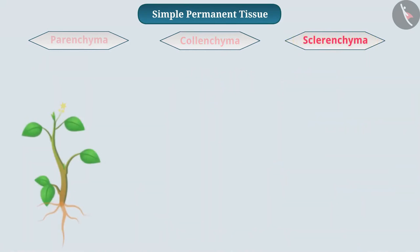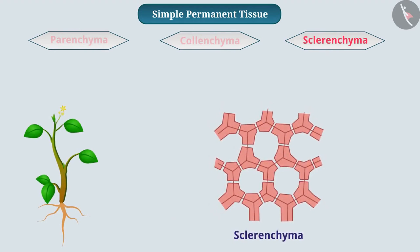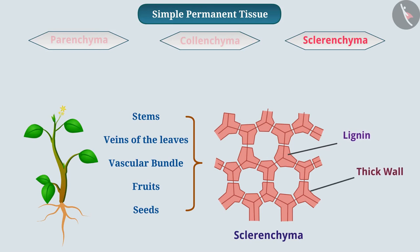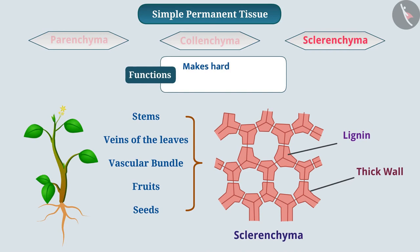Sclerenchyma tissue in plants is present in the stem, veins of the leaves, near the vascular bundle, and in the hard covering of fruits and seeds. Its cells are dead, long and thin, and in their walls lignin is present. Lignin is a chemical compound that attaches cells to each other. Due to lignin, the walls of cells are very thick and there is no internal space between the cells. Therefore, sclerenchyma makes the plant hard and strong, and sclerenchyma protects the plant.